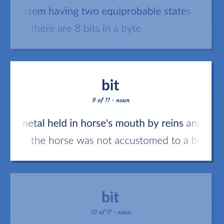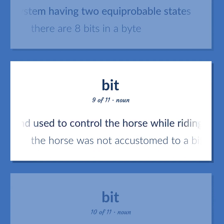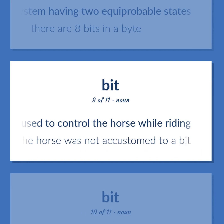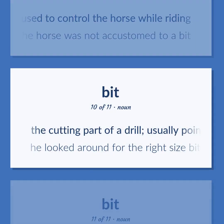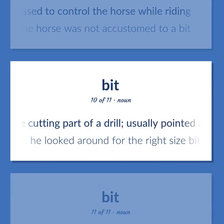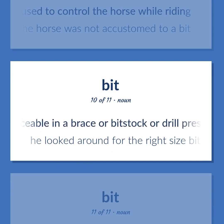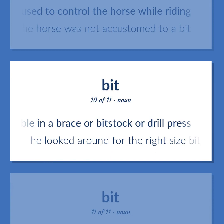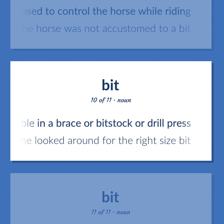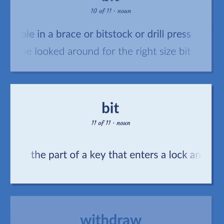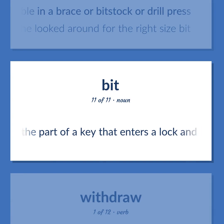Bit: A piece of metal held in a horse's mouth by reins, used to control the horse while riding — the horse was not accustomed to a bit. The cutting part of a drill, usually pointed and threaded and replaceable in a brace or bitstock or drill press — he looked around for the right size bit. The part of a key that enters a lock and lifts the tumblers.